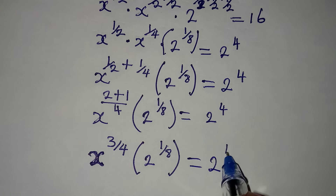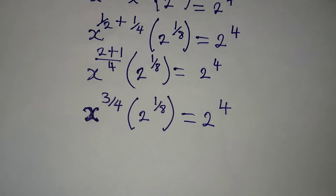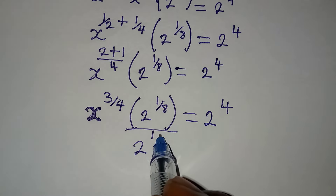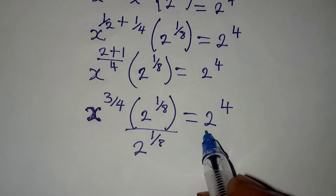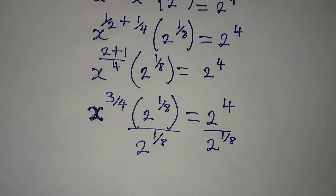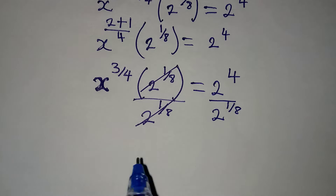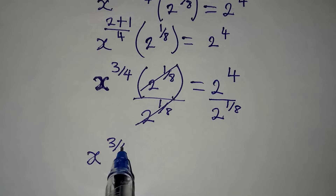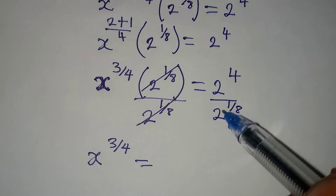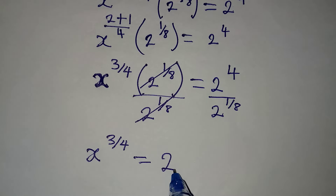We have x to the power of 3 over 4, then 2 to the power of 1 over 8, equal to 2 to the power of 4. Now I have to divide both sides by 2 to the power of 1 over 8. That will cancel, and x to the power of 3 over 4 is equal to 2 to the power of... We have the same base 2 and 2, so we can subtract the powers: 4 minus 1 over 8.